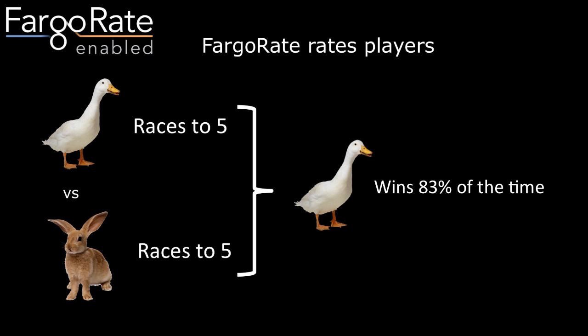Here's an example of the kind of information we can get. Suppose the Goose and the Rabbit play a race to five — both players go to five. Based upon their Fargo Ratings, with the Goose being 90 points above the Rabbit, the Goose wins 83% of the time — 83% of these race-to-five matches. That's about five out of six.